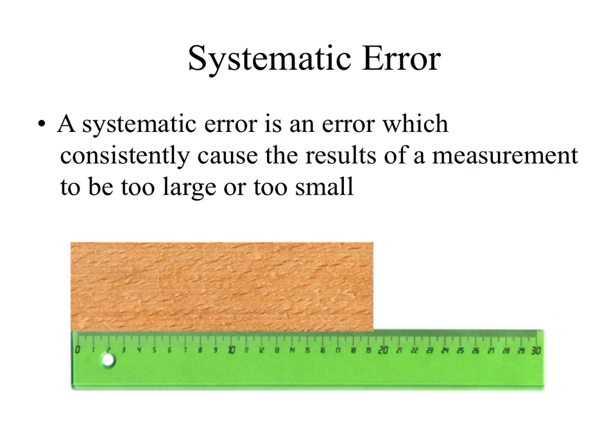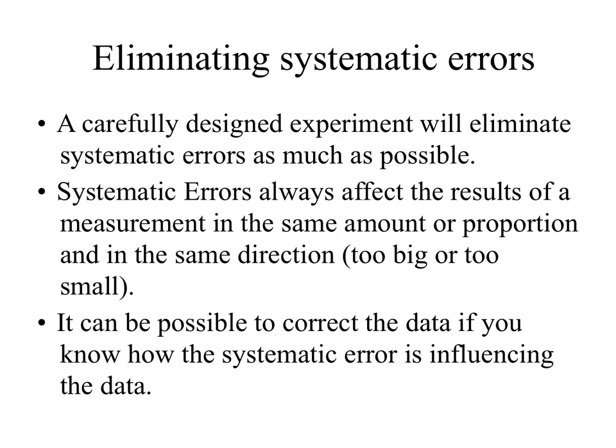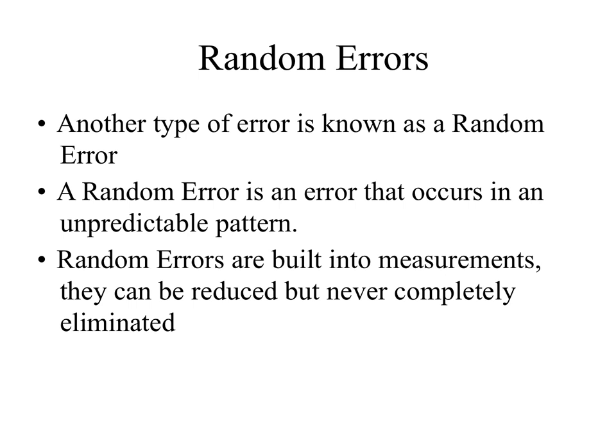These are things that create systematic errors — something in the experimental design that causes the values you measure to always be off by the same amount. Of course, when designing an experiment we want to eliminate systematic errors whenever we can by using instruments properly. Even if you're doing everything right there can still be systematic errors built into the apparatus, but if you know them you can correct and account for them.